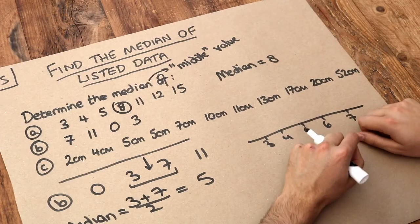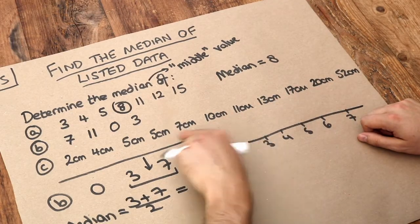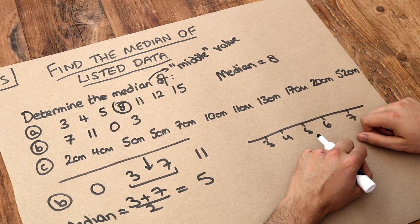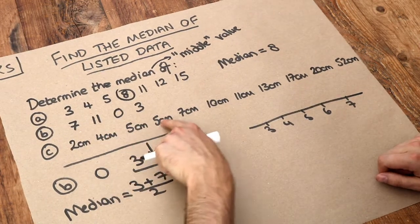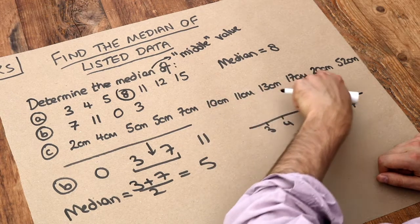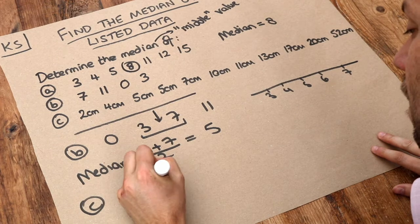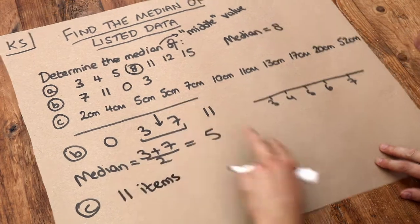Now for the last one, this is just a trick that we can use if we have an odd number of numbers. To work out the position of the middle one, you first count how many there are. So you got 1, 2, 3, 4, 5, 6, 7, 8, 9, 10, 11. So there's 11 items.